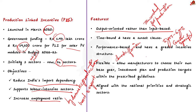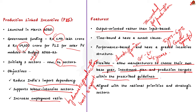For example, the scheme provides an incentive of 4% to 6% on incremental sales of goods manufactured in India to eligible companies for a period of 5 years. Fourth, it is flexible in nature, allowing manufacturers to choose their own base year, investment plan, and production targets within prescribed guidelines. Finally, the scheme is aligned with national priorities and strategic sectors, aiming to reduce import dependency, promote innovation and R&D, create employment, and enhance India's share in the global value chain.